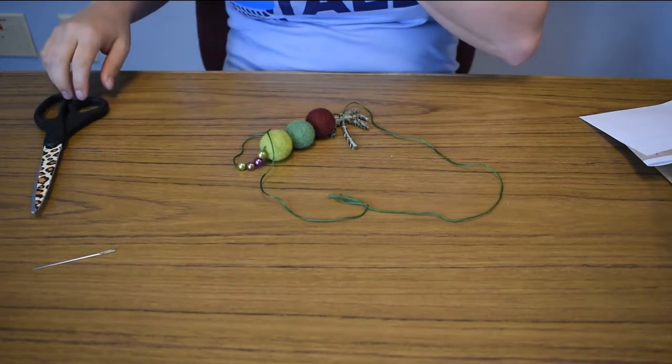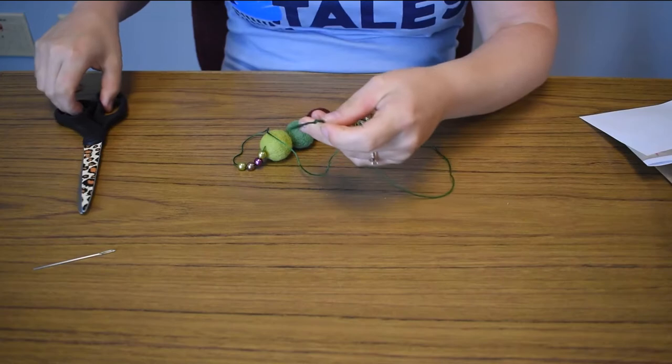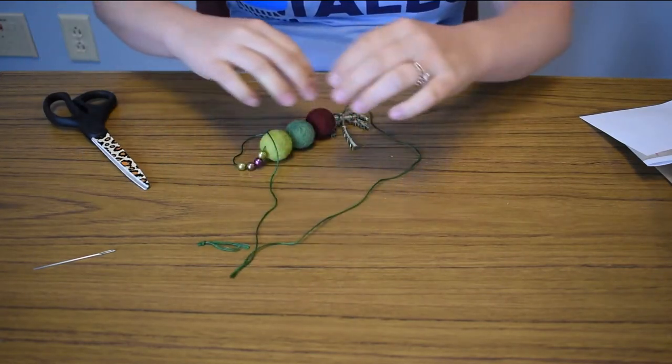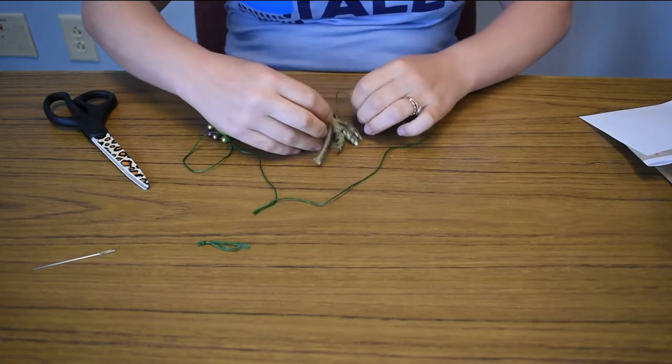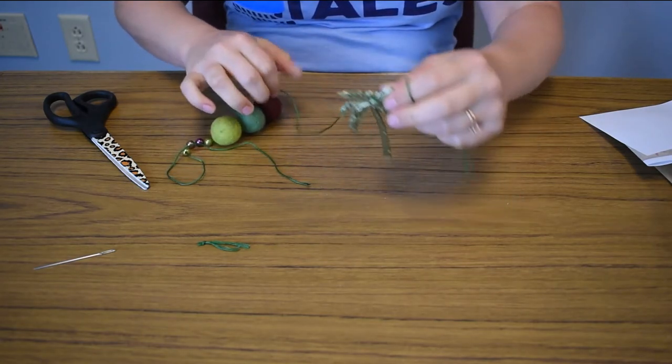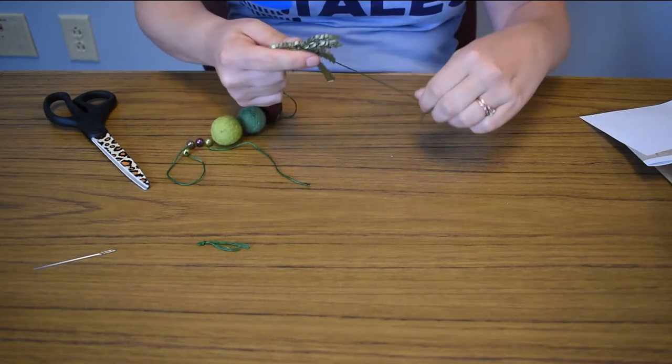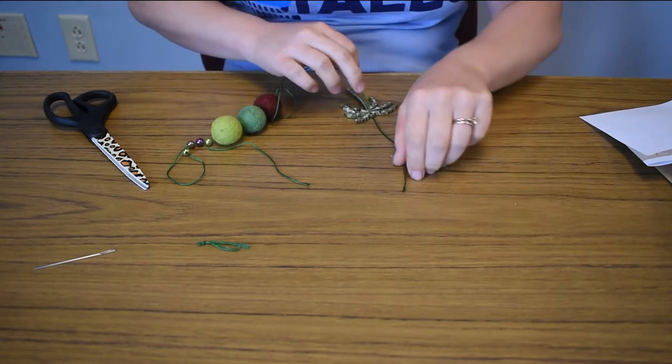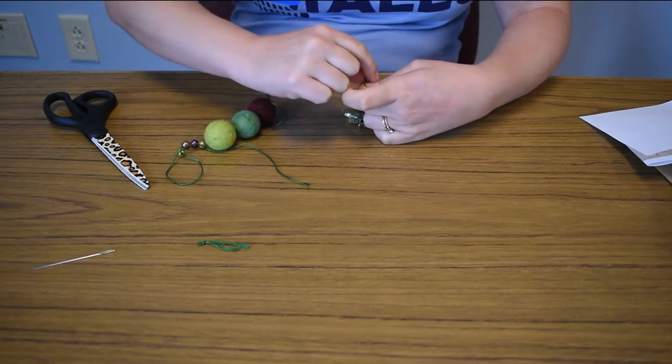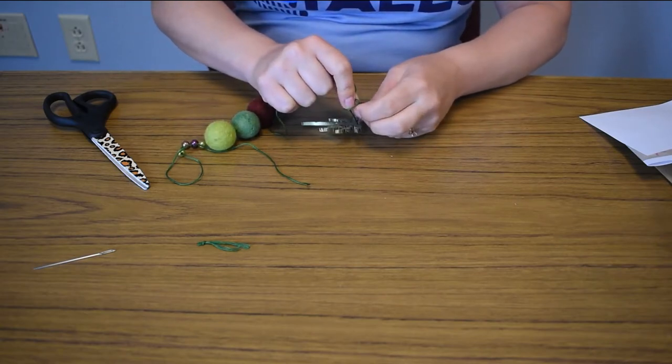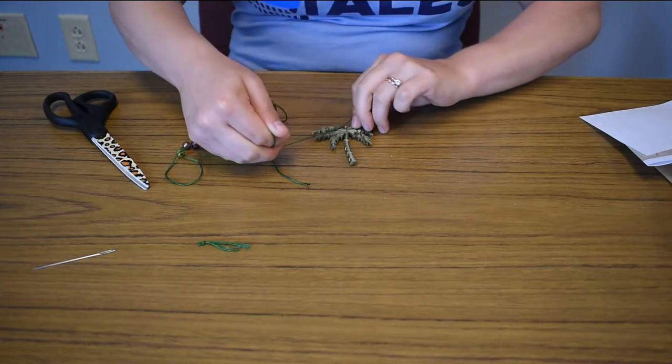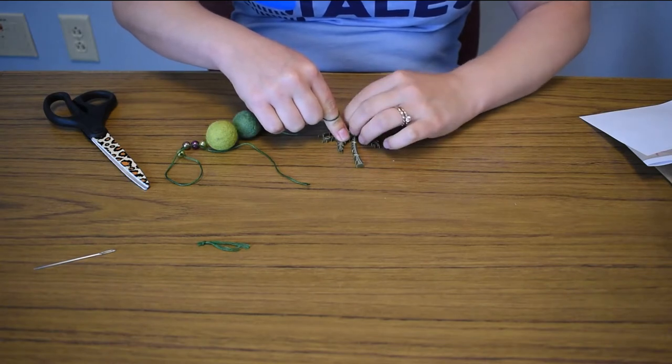The other way that you can do this, I'm going to just cut the end of this, is to pull your charm all the way to the bottom and tie it. And your charm will act as a stopper. And when you tie it, you'll want to do a double knot.